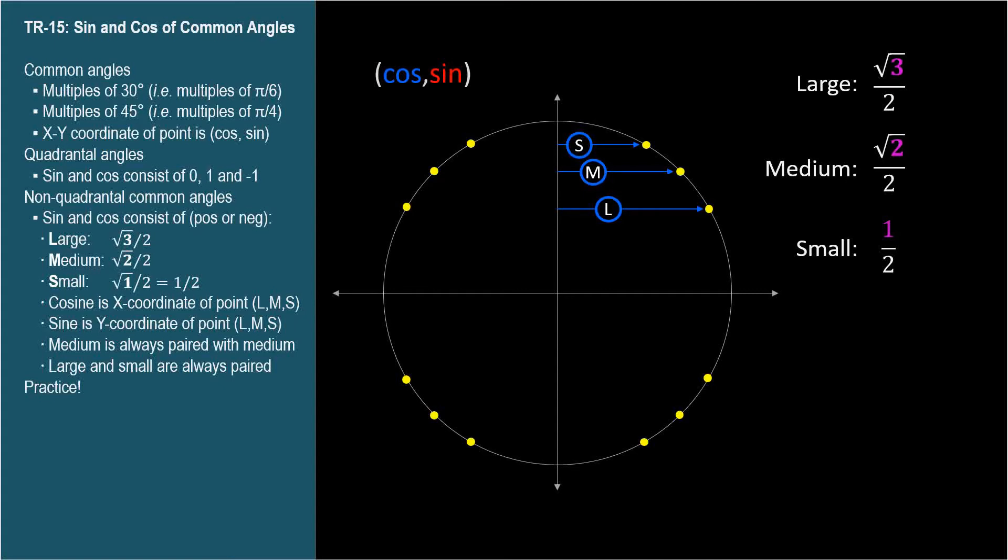Yes, it's that simple. The cosine of thirty degrees is the large number, square root of three over two. The cosine of forty-five degrees is the medium number, square root of two over two. And the cosine of sixty degrees is the small number, one half.